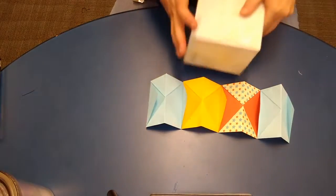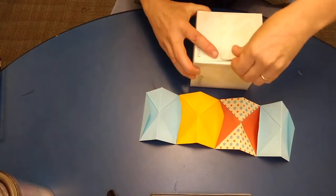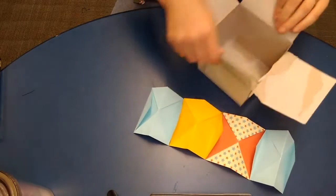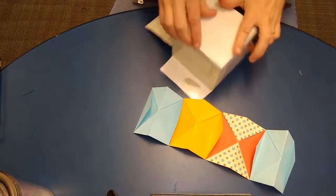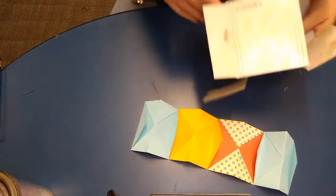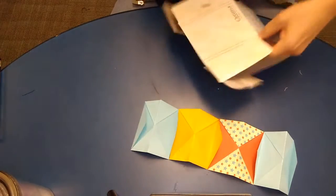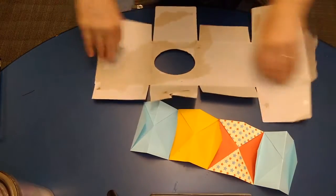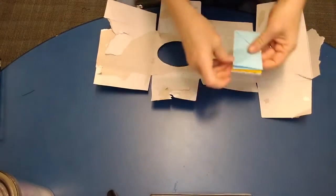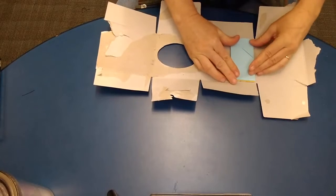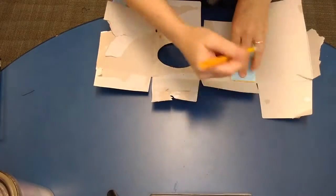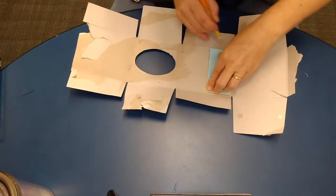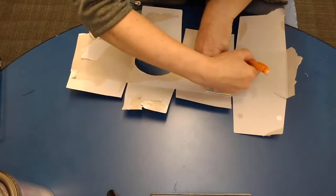Next thing you want to do is get some cardboard or anything that's stiff so we can make the ends of our book and the ends of the book will be nice and solid. I'm going to measure it by folding up my folded book like this. So I'm just going to draw a rectangle that is the same size as my book.